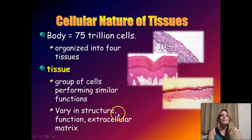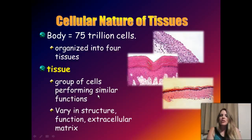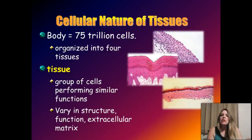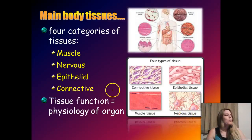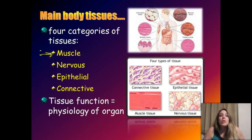We can take all these cells and ask: how do these cells work together to make an organism function? If you have a group of diverse cells all working together for a common function, we call that a tissue — not the tissue you blow your nose with, but the tissues that make up our body. We can organize them into basically four categories.